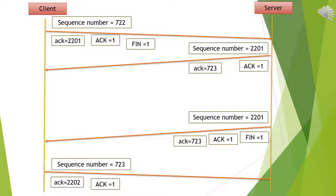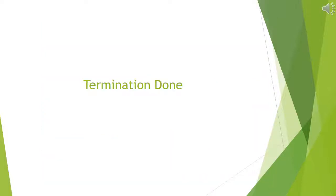ACK flag is also set to 1. After that, the server also wants to terminate the connection, so the server sends sequence number 2201, acknowledgement 723, ACK flag equals 1, and FIN flag equals 1 — most important for terminating the connection. The client replies with sequence number 723, acknowledgement 2202, and ACK flag equals 1, meaning the client has received the request for terminating the connection. Termination is over and we are done with all three steps.